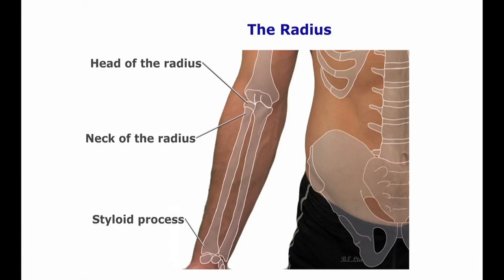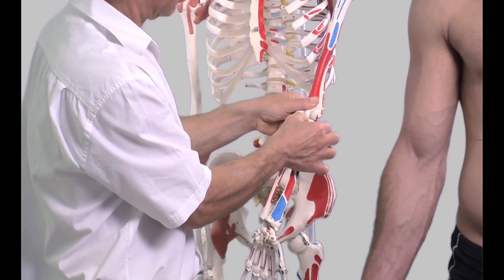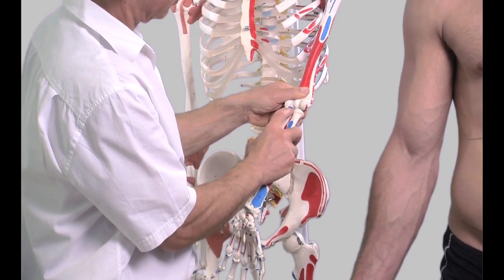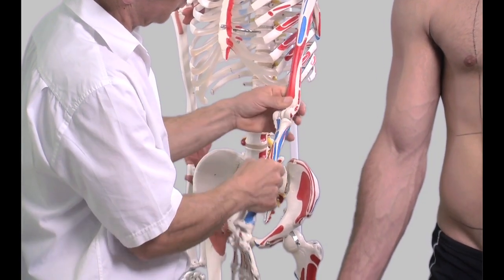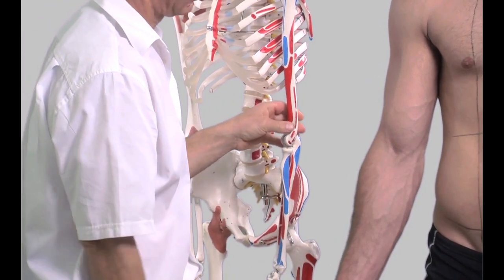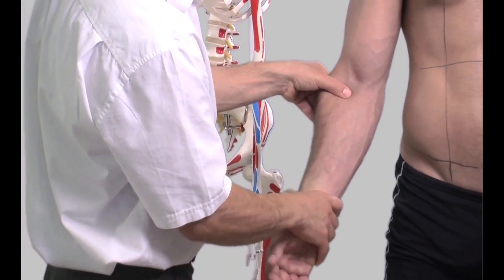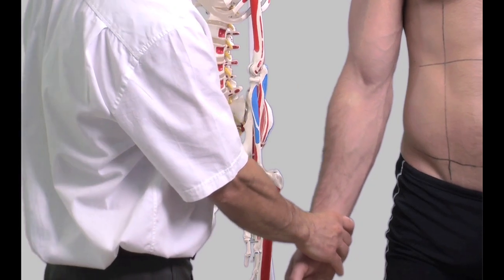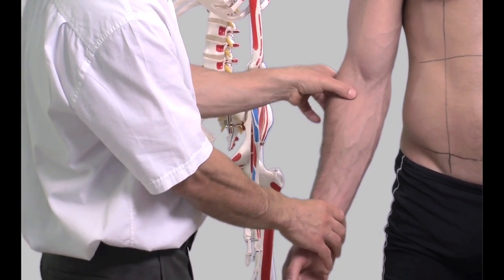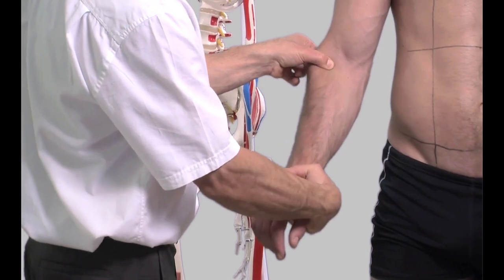The head of the radius is at the proximal end of the radius, approximately one centimetre distal and slightly medial to the lateral epicondyle of the humerus. It has a cylindrical shape and on its upper surface it has a shallow cap or fovea for the articulation with the capitulum of the humerus. The neck of the radius is defined by a groove which contains the annular ligament to give it stability when the radius is rotated along its long axis. The head of the radius may be palpated with a pinch-like hold of the uppermost lateral aspect of the forearm whilst it is supinated and pronated.